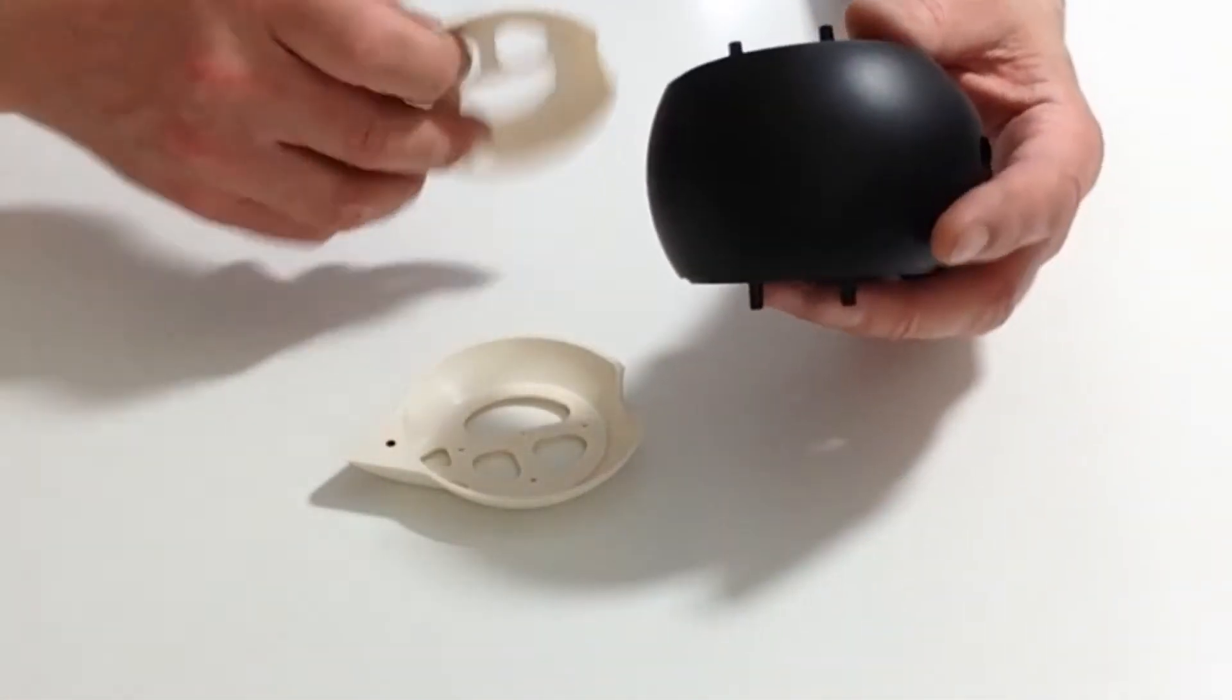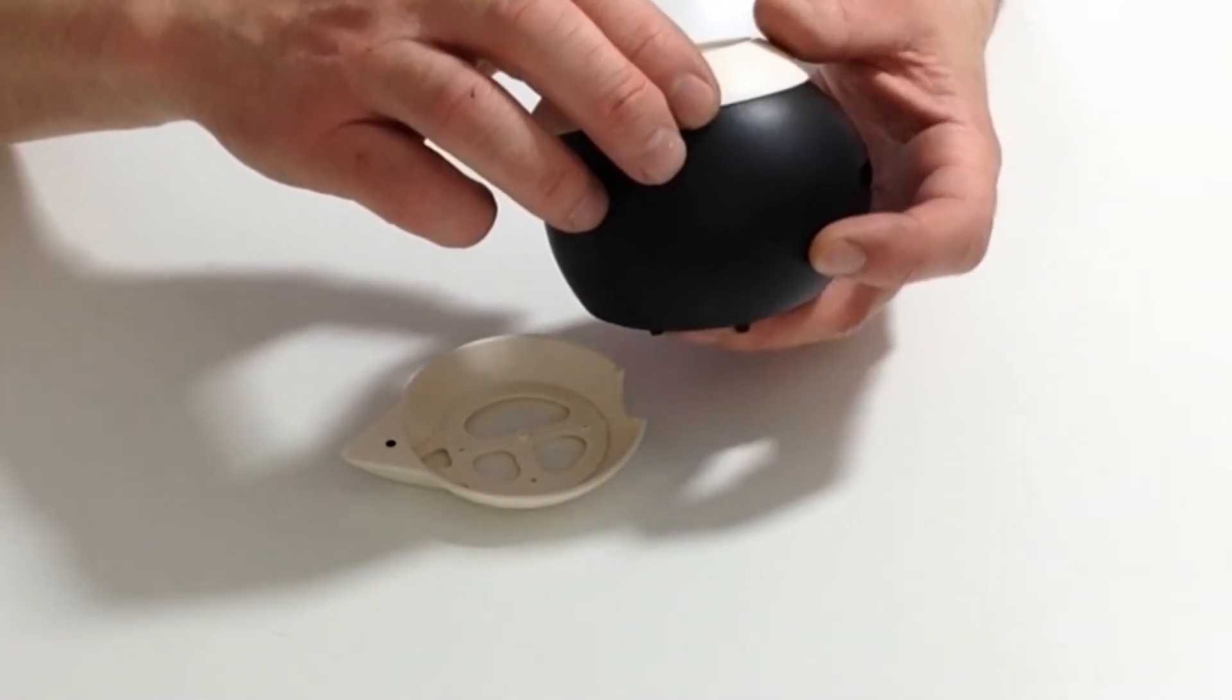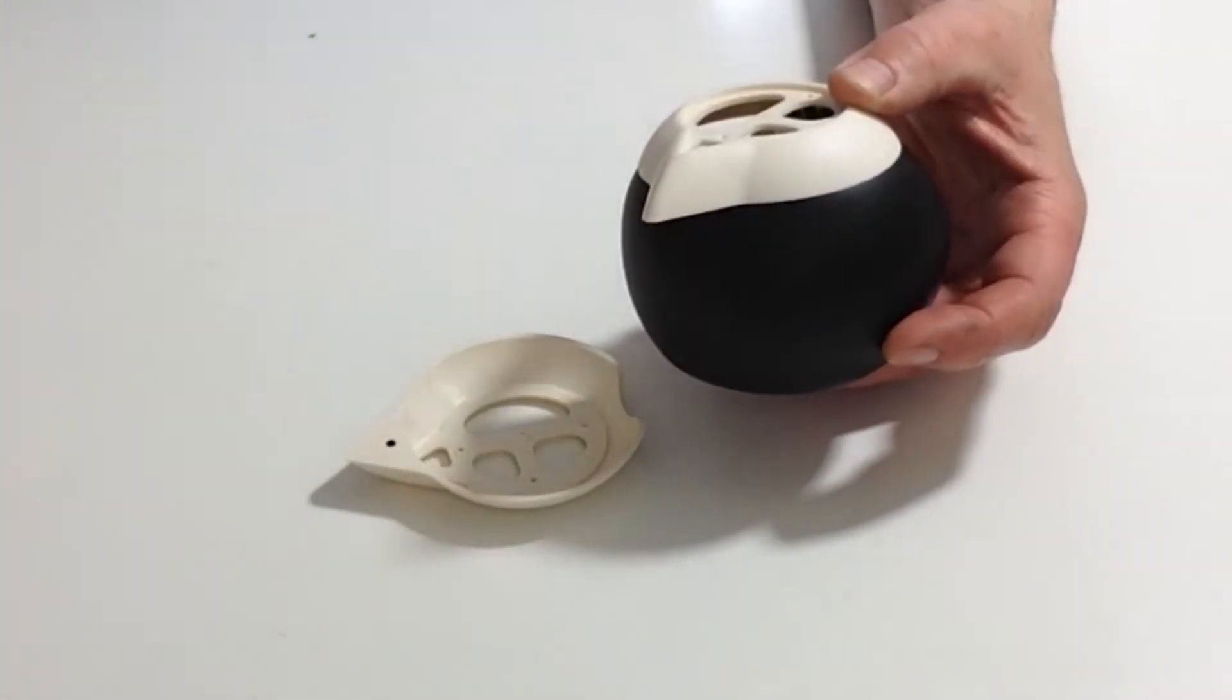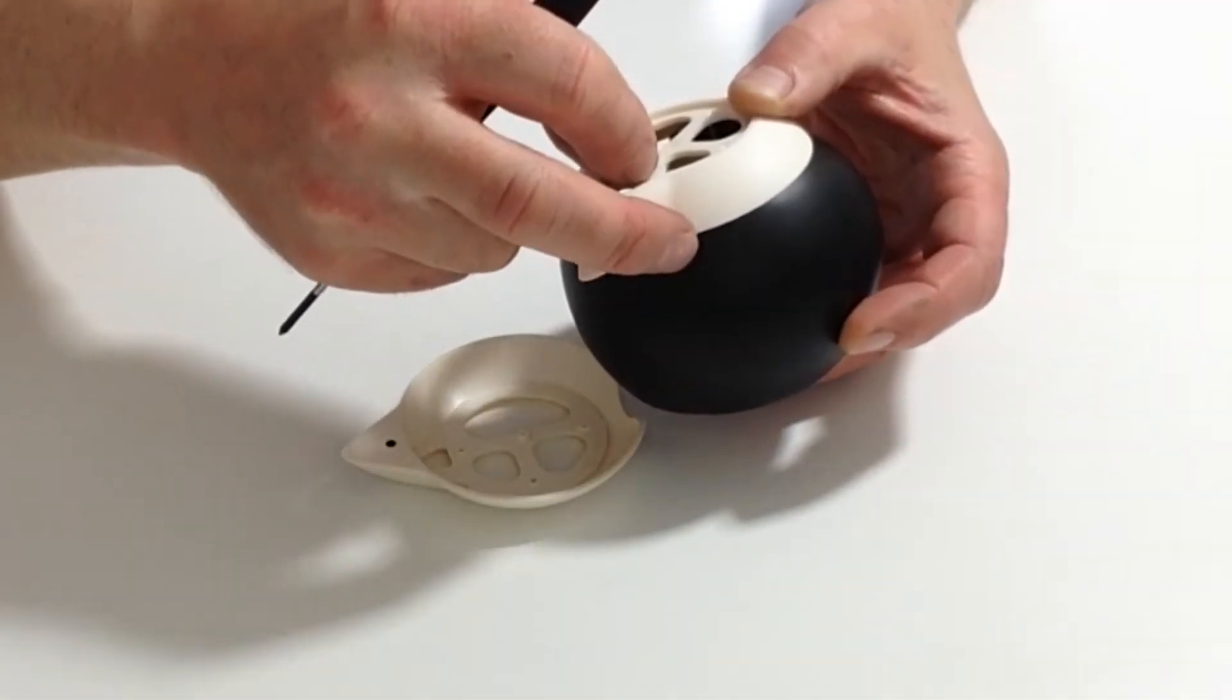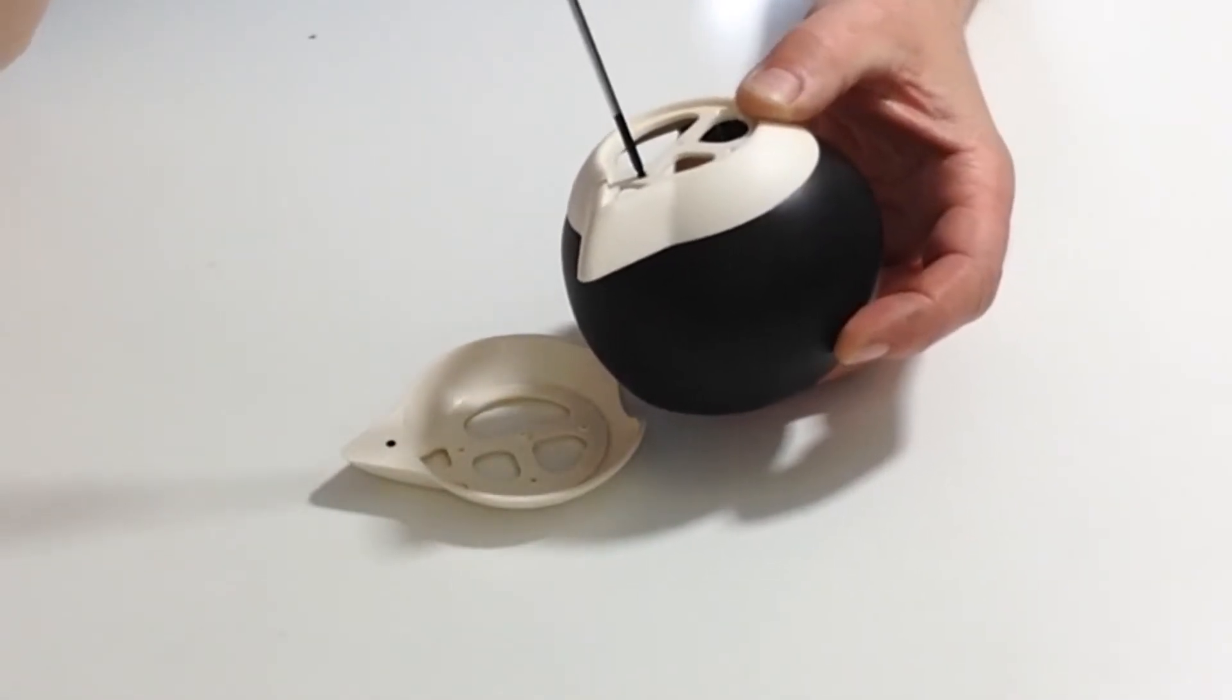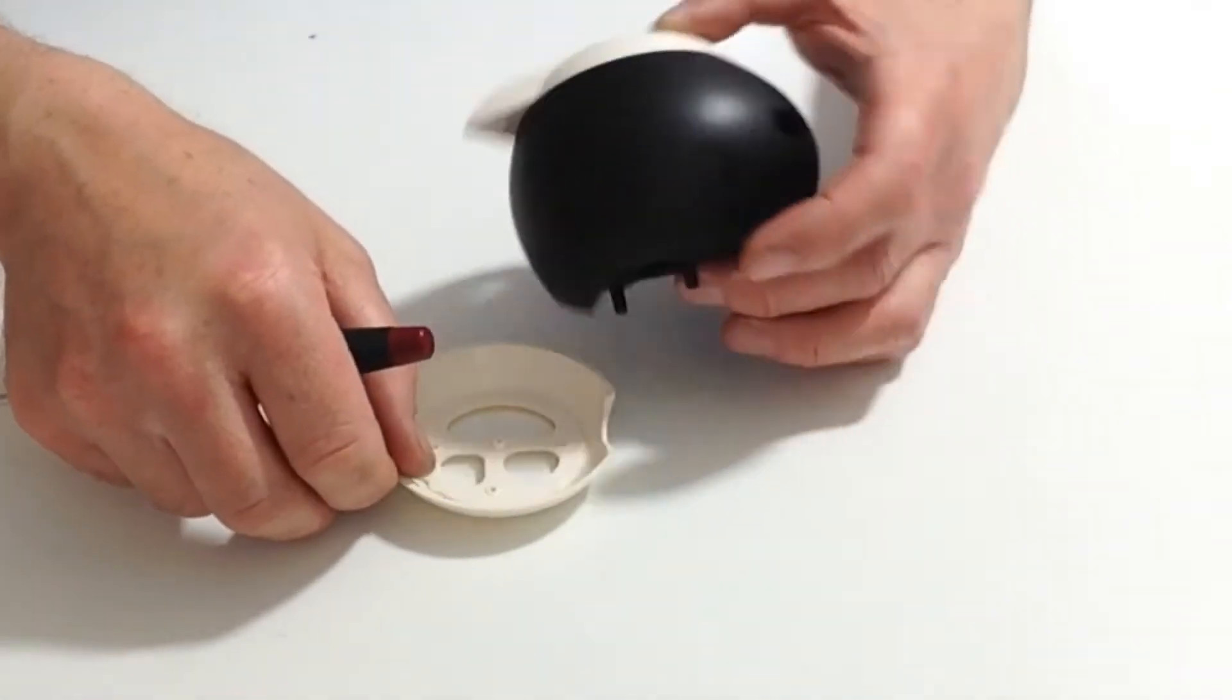Take the ear and line up the corresponding three holes. Once again, take three of the 4.5mm countersunk screws and screw those down into position. Once you've done that, do exactly the same with Robbie's right ear.